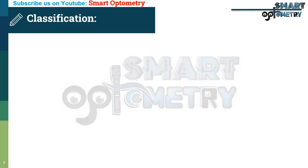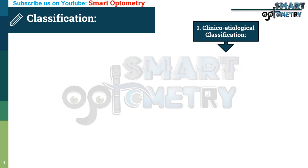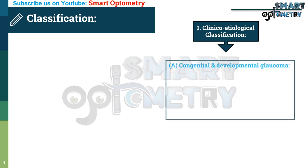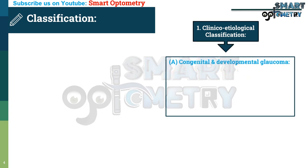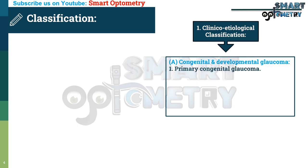Now, classification of Glaucoma. First, the clinico-etiological classification: A. Congenital or developmental glaucoma — this may be 1. Primary congenital glaucoma or 2. Developmental glaucoma.